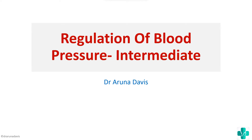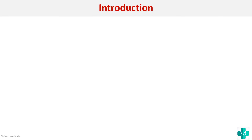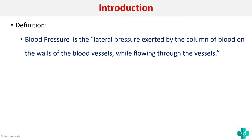In this video we're going to discuss intermediate regulation of blood pressure. Blood pressure is the lateral pressure exerted by the column of blood on the walls of blood vessels while flowing through them. The normal range is around 120 and 80 millimeters of mercury.